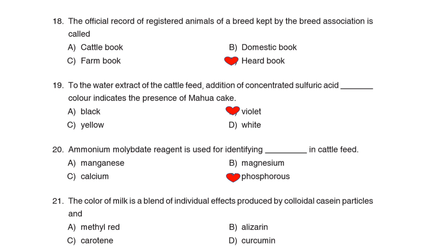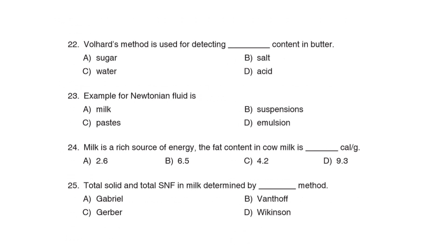21st Question: The color of milk is a blend of individual effects produced by colloidal casein particles and Correct Answer: Option C: Carotene. 22nd Question: The Wollny method is used for detecting dash content in butter. Correct Answer: Option B: Salt content.